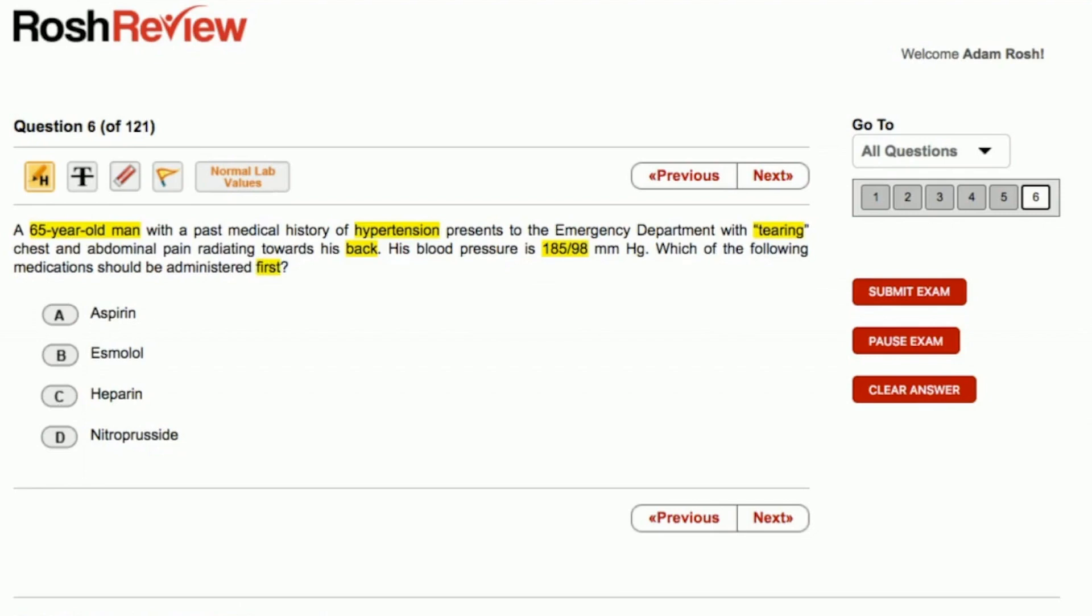aspirin. Well, we know aspirin is useful in cases of myocardial infarction or ischemia. However, aspirin here is going to inhibit platelets and ultimately lead to increased bleeding potentially. And so we want to avoid that since right now the patient's aorta has an intimal tear with a hematoma in the media of the aorta. And so we want to reduce bleeding.